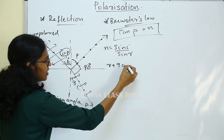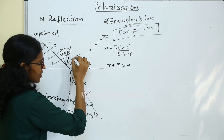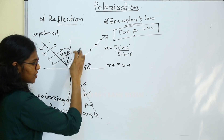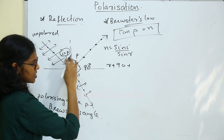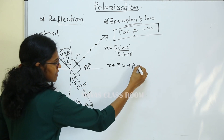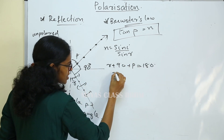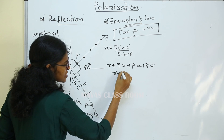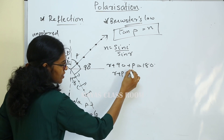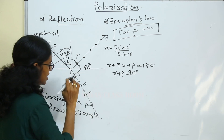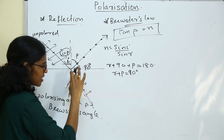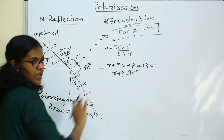We can add the polarizing angle: R plus 90 degrees. So 90 degrees plus the polarizing angle gives the reflected angle. We can add that to the angle of reflection, so R plus P is equal to 180 minus 90 degrees.